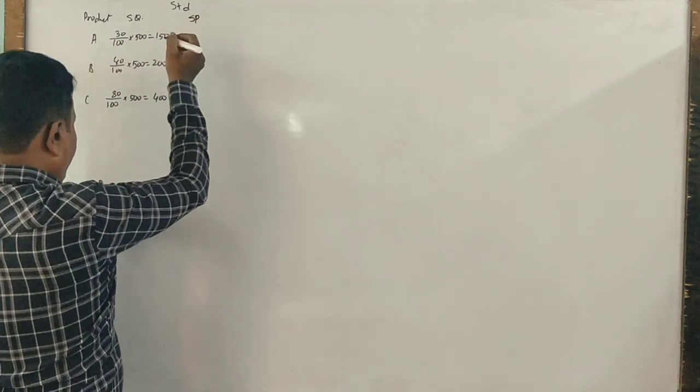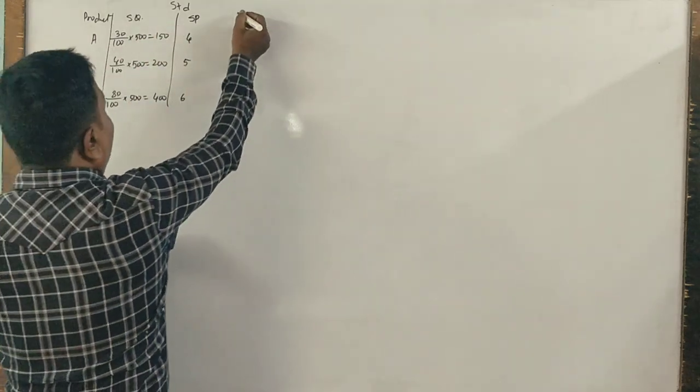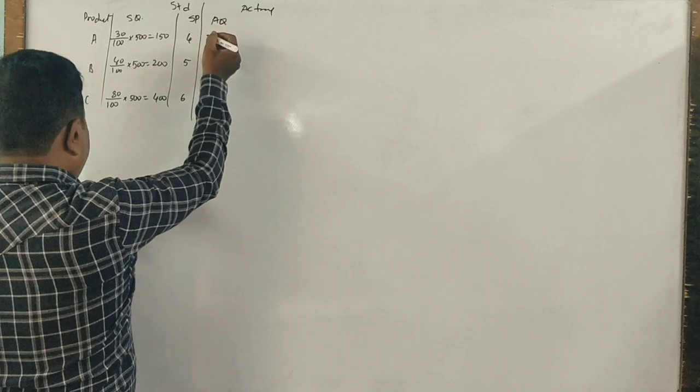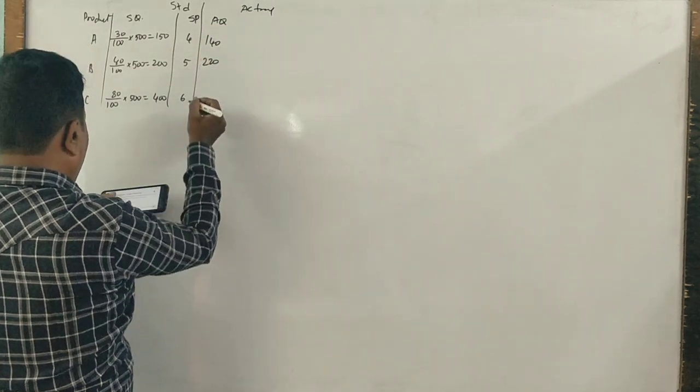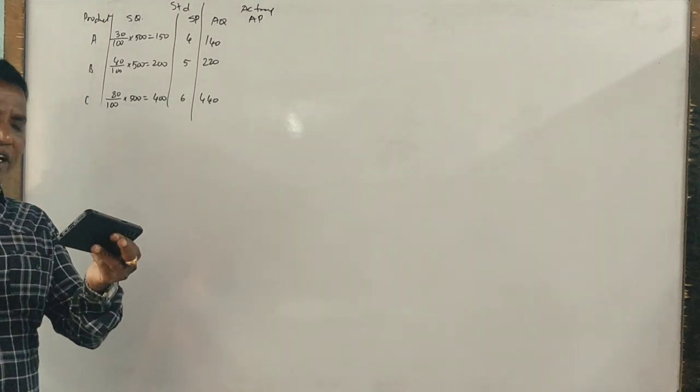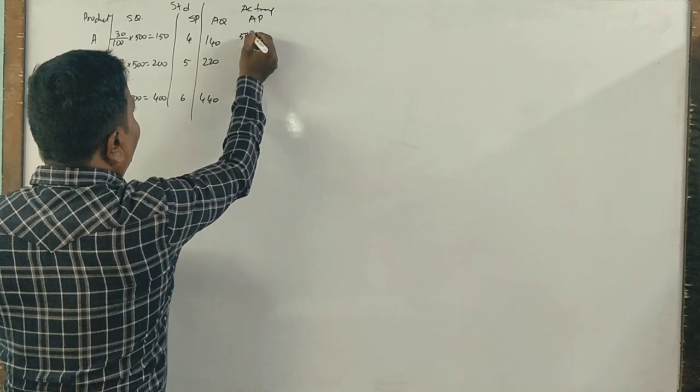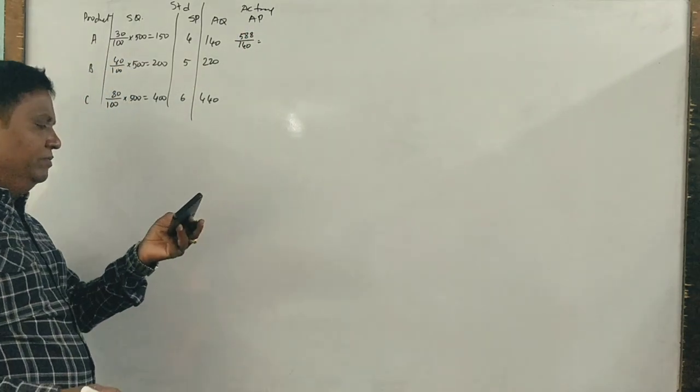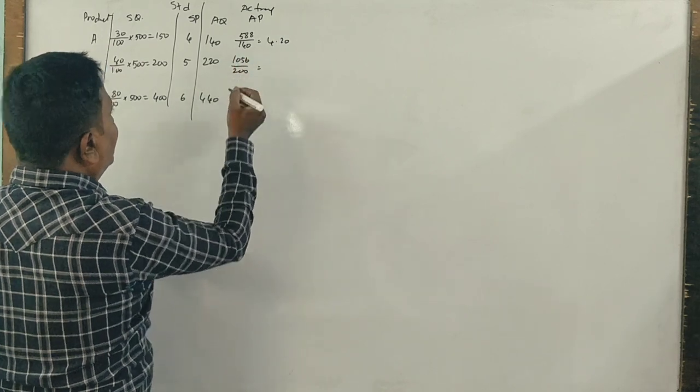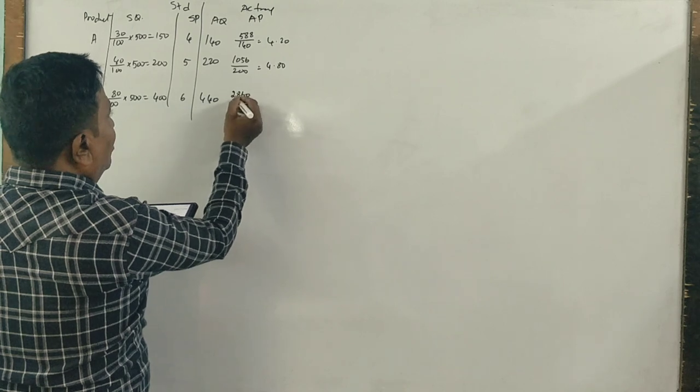Standard price - now let's check the actual. Actual quantity required is 140, 220, 440, but actual price is not given. For 140 kg you paid 588 rupees, so 588 divided by 140 kg, what is per kg? 4.2 rupees. Next is 1,056 rupees paid for 220 kg, what is per kg? 4.8. Next, 440 kg for 2,860 rupees, what is per kg? 6.5.